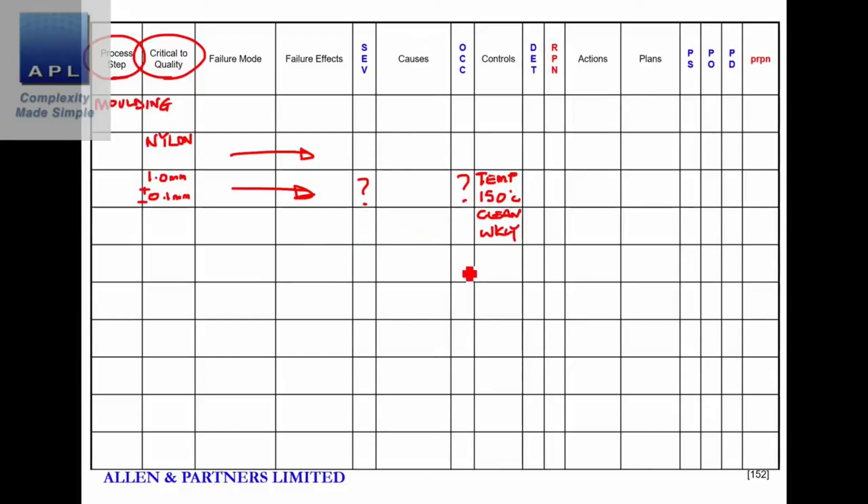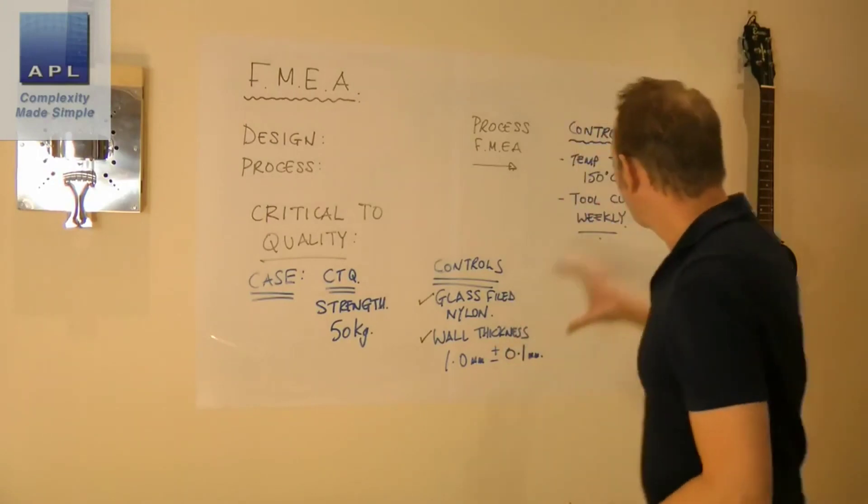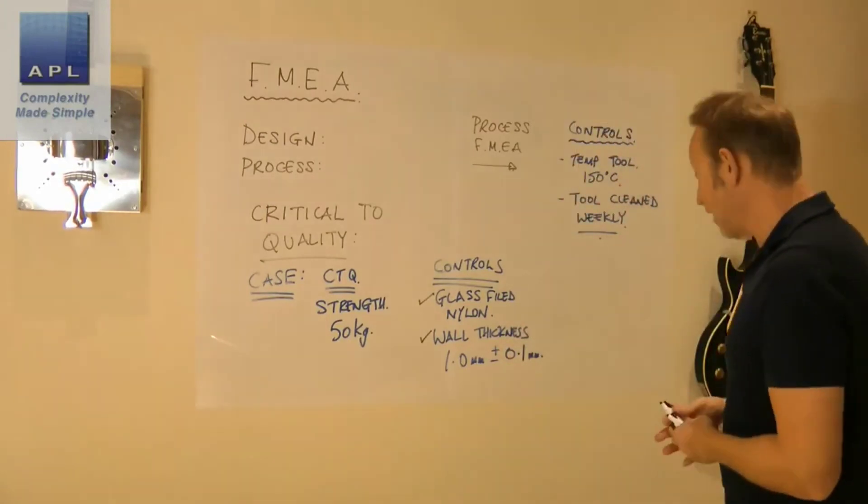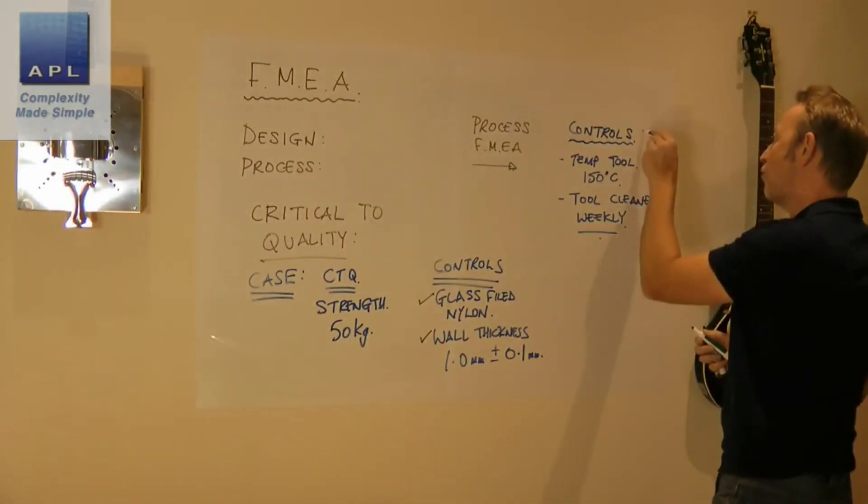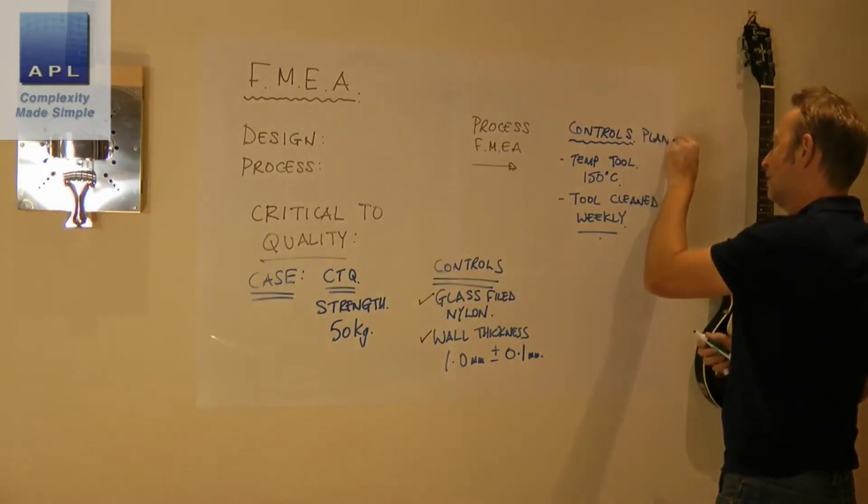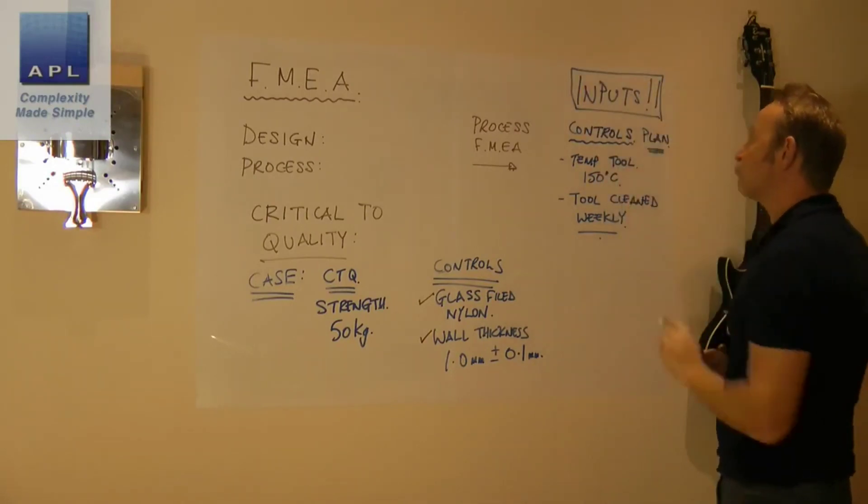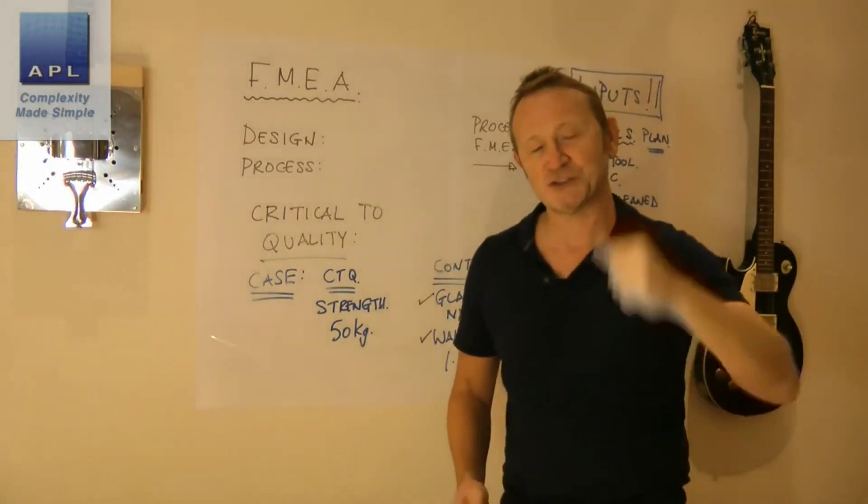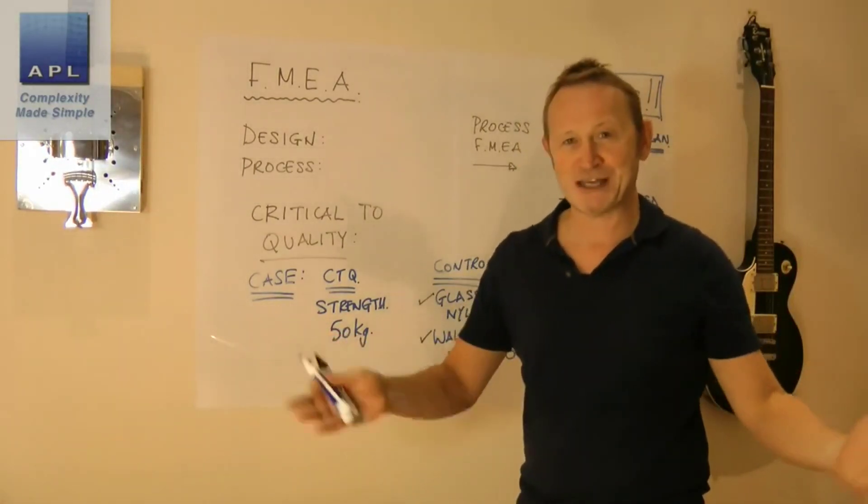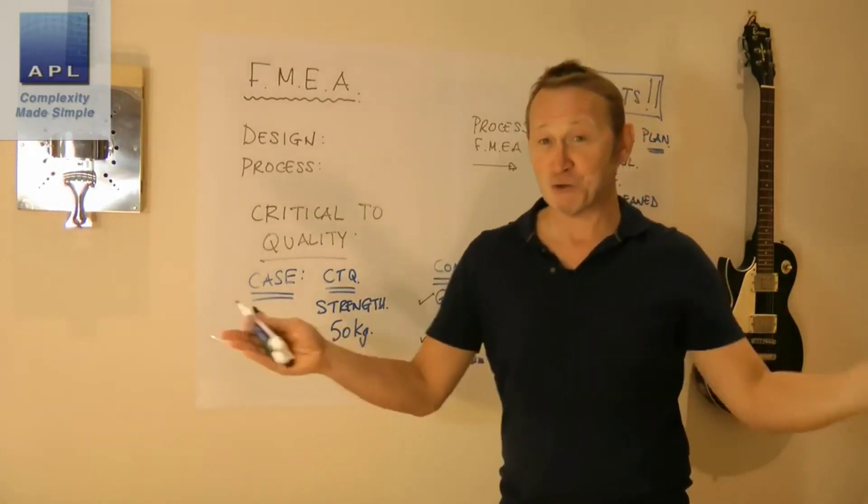Now that is the way FMEAs are supposed to work. When I'm looking at the bottom, by the way, this is a proper control plan, because what's it doing? It controls inputs. That's what a control plan does. Doesn't measure outputs. Measuring outputs is just a gatekeeper. It says we don't know what we're doing, so we'll measure the crap out of it.